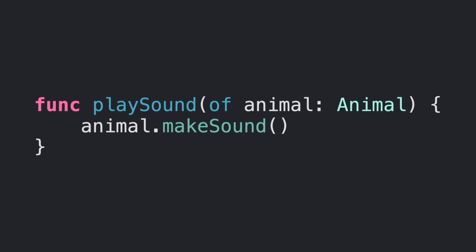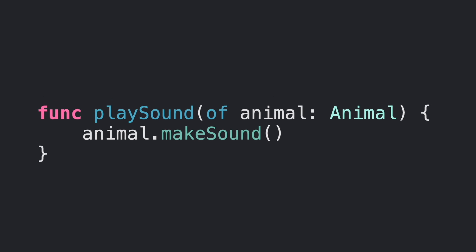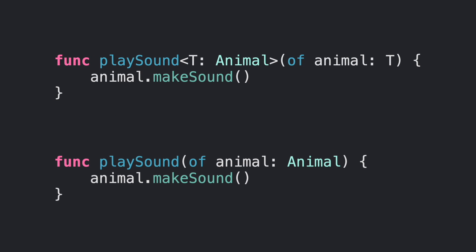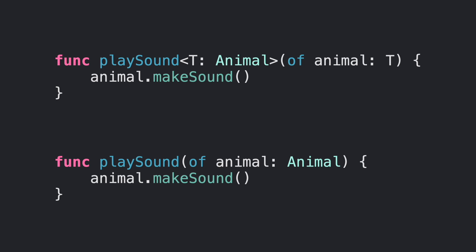So what is the point of the 'any' keyword? Let's focus on the play sound functions again. If you had to choose one approach to implement this function, most people would use the second approach with the existential type. Creating a generic function just for a simple task like this sounds like overkill. Also, some books like Clean Code recommend using interfaces to model your objects to generate dependency injection.